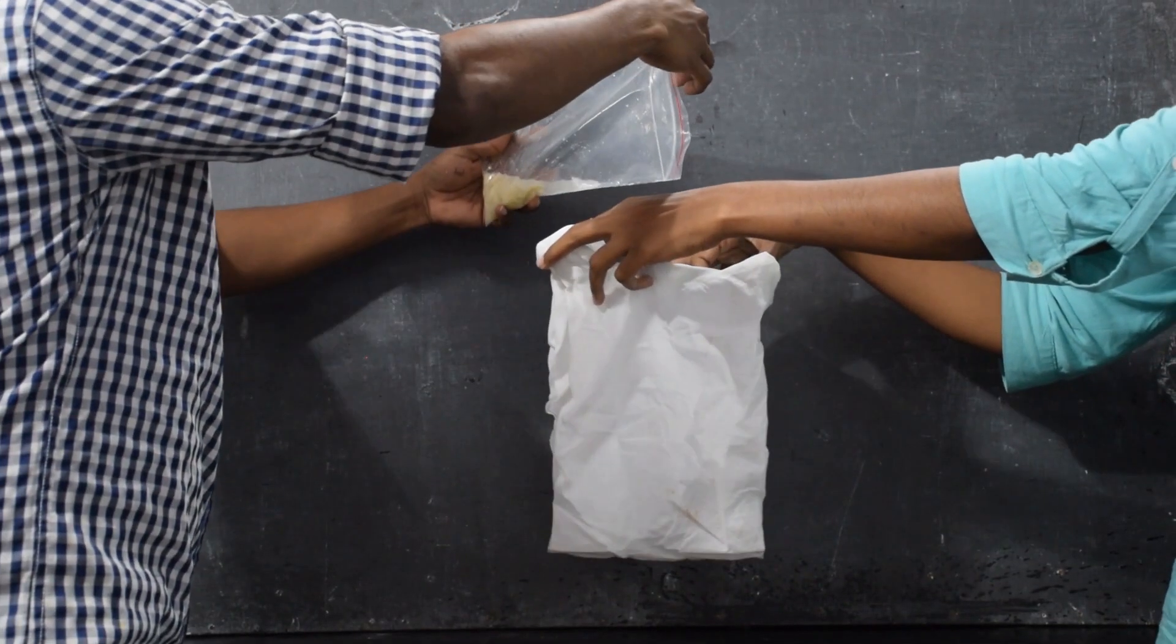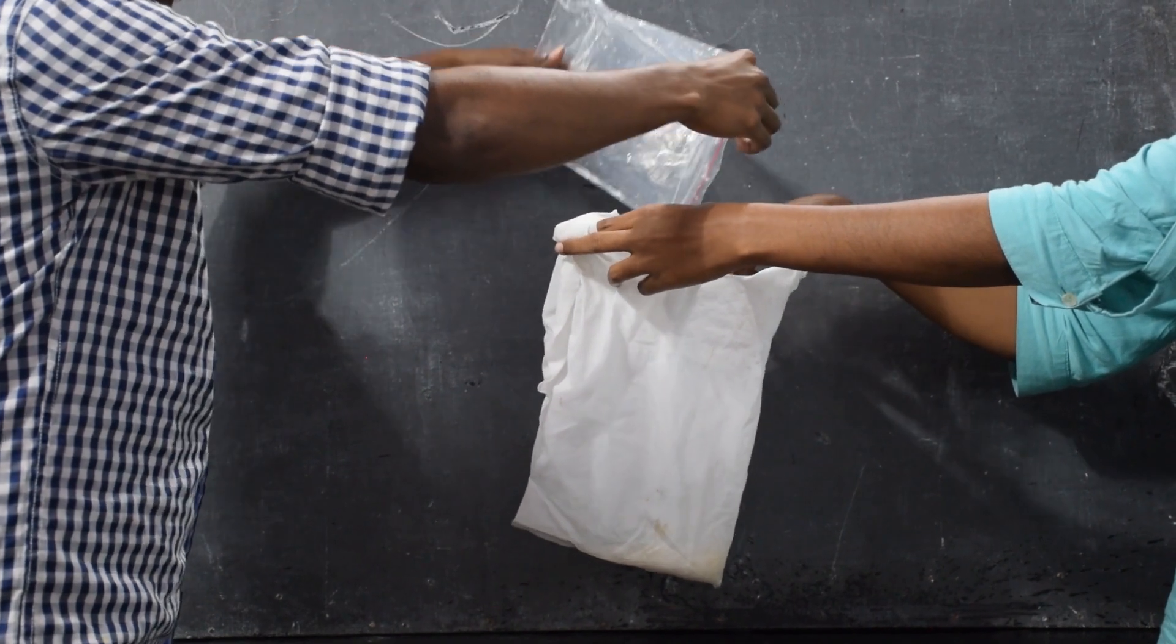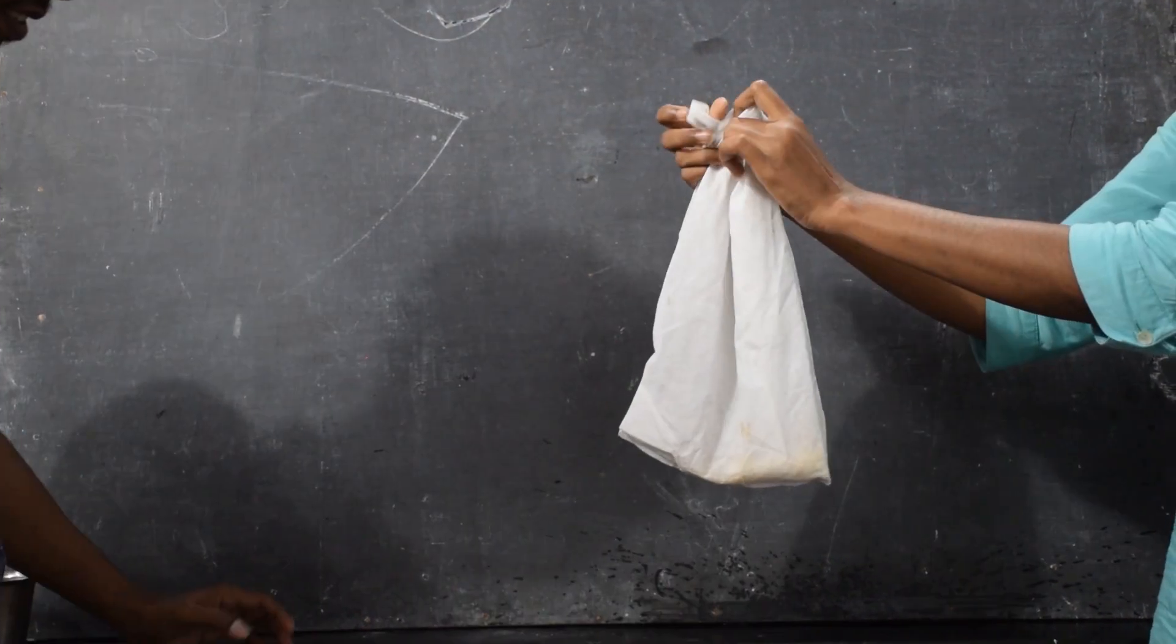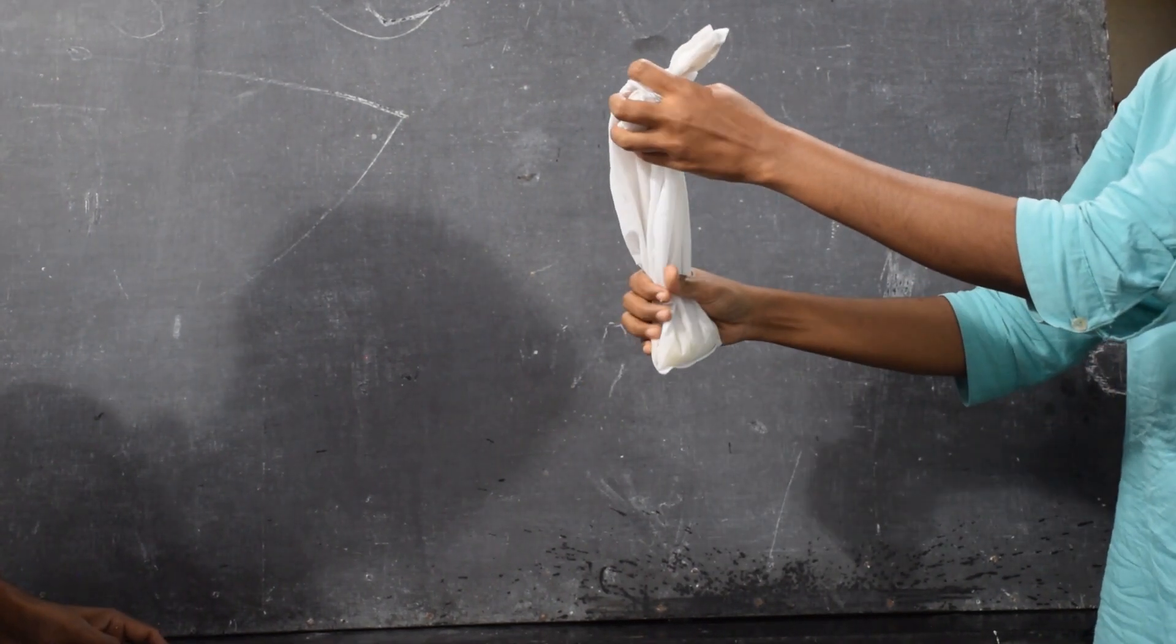From the stomach, the food goes to the small intestine. Here we have used a cloth bag to simulate the small intestine. Once we put the food inside, we will close the bag and we will squeeze it.